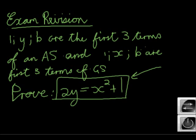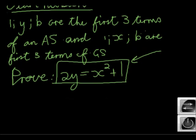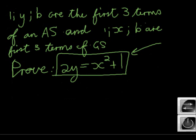So 1, y, b is the first three terms of an arithmetic sequence. What does that mean? When is something an arithmetic sequence? Common difference. In other words, what do I know? Sorry, just before we go on, do you see what this is? This is an equation, which means what I'm trying to find is equations.